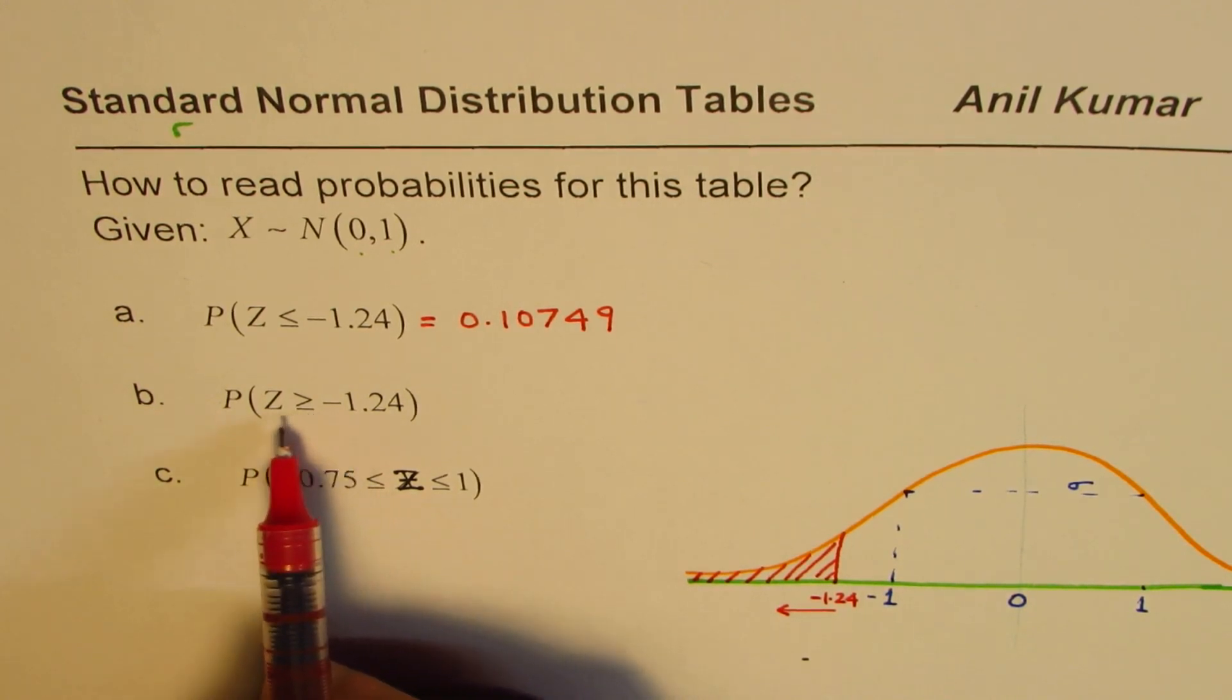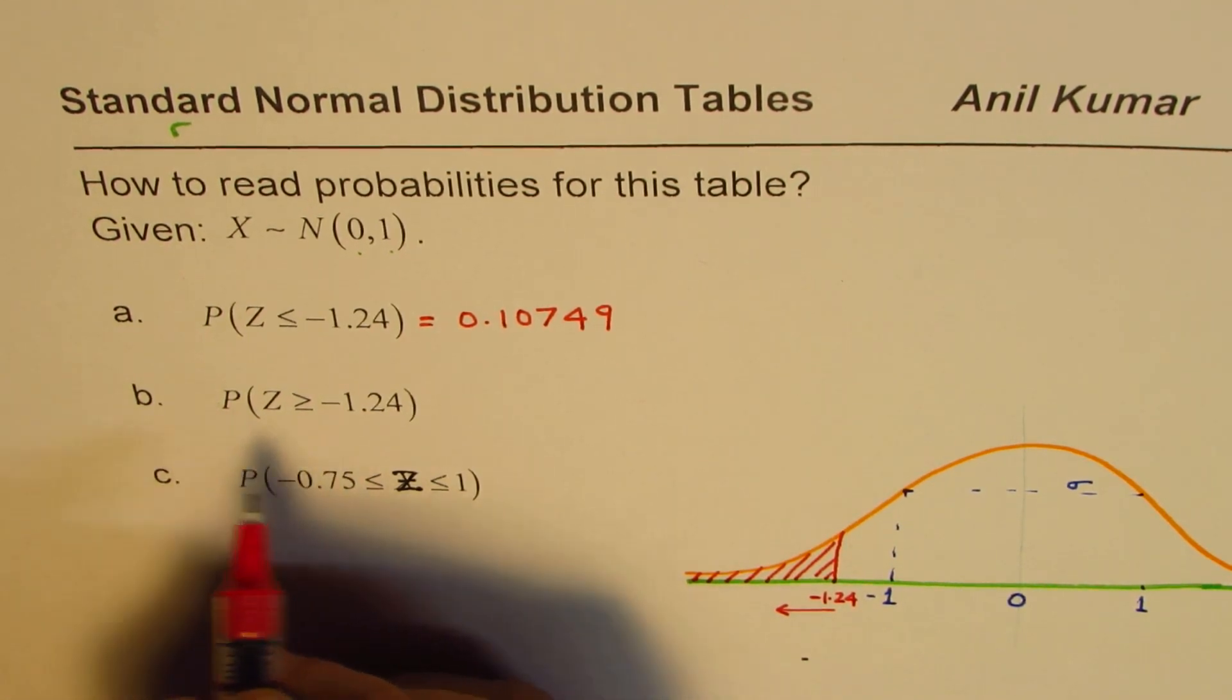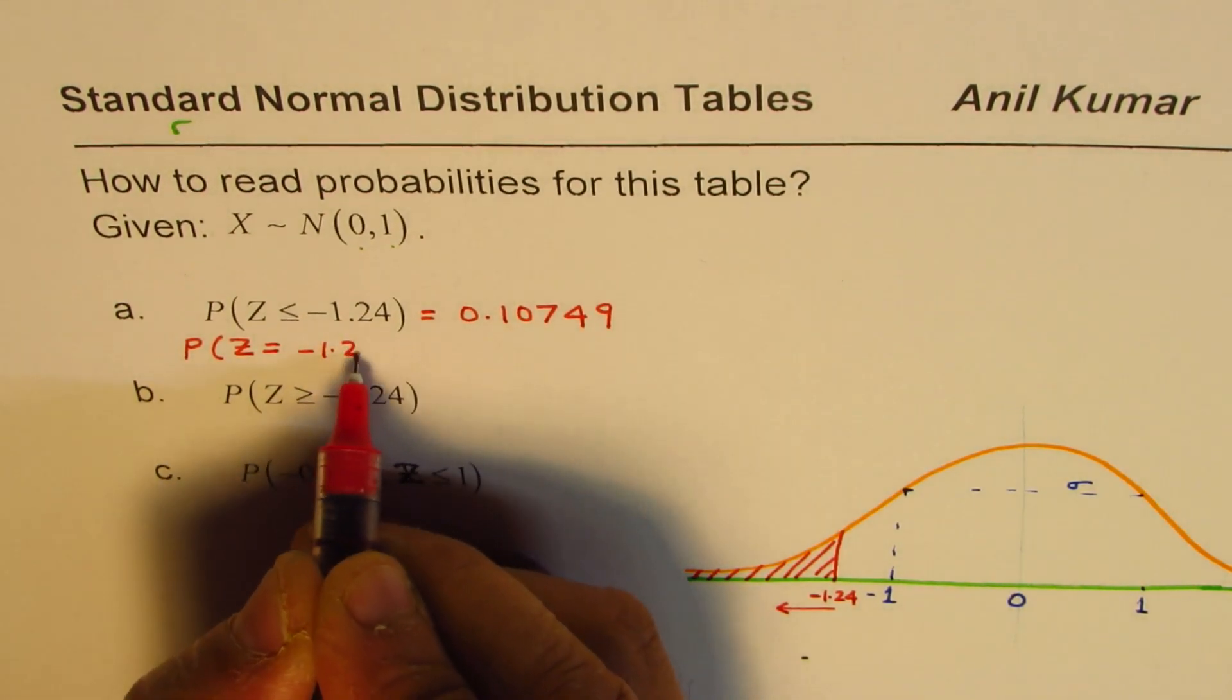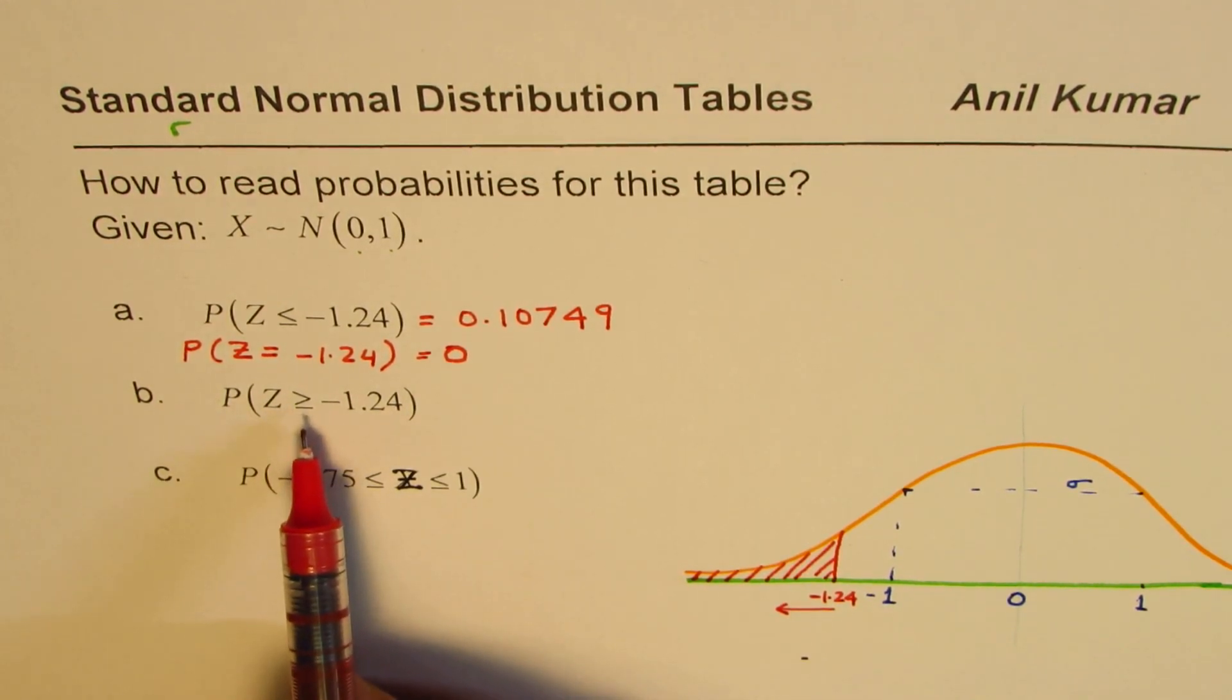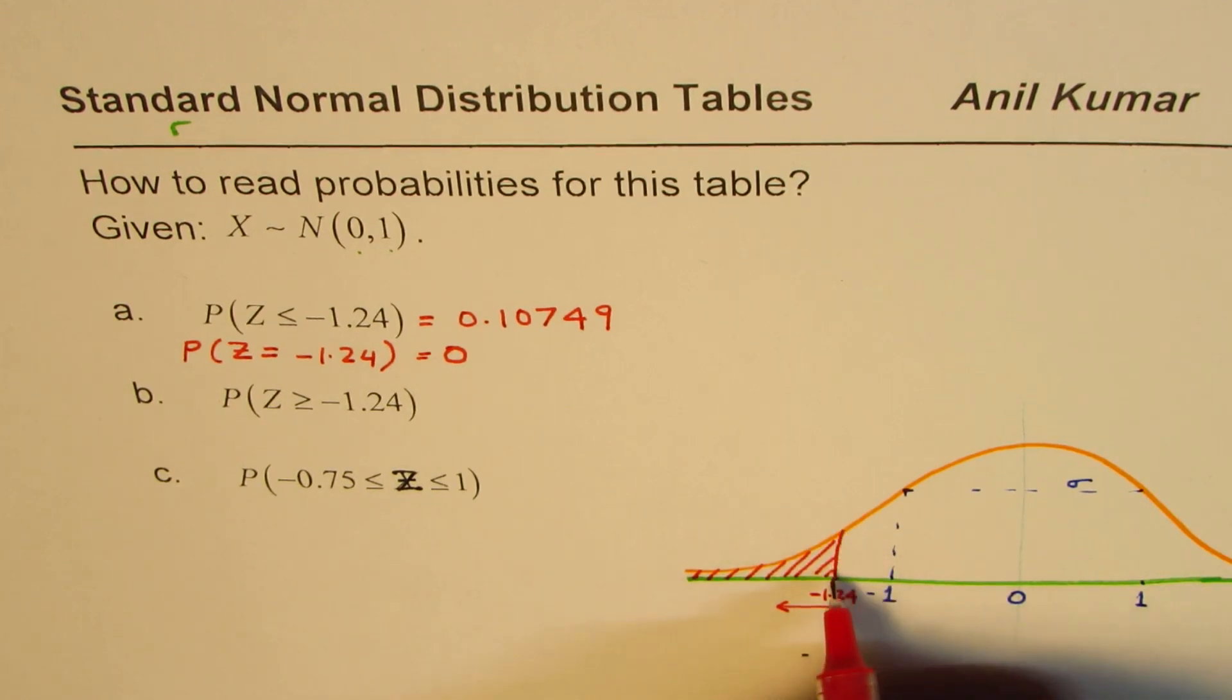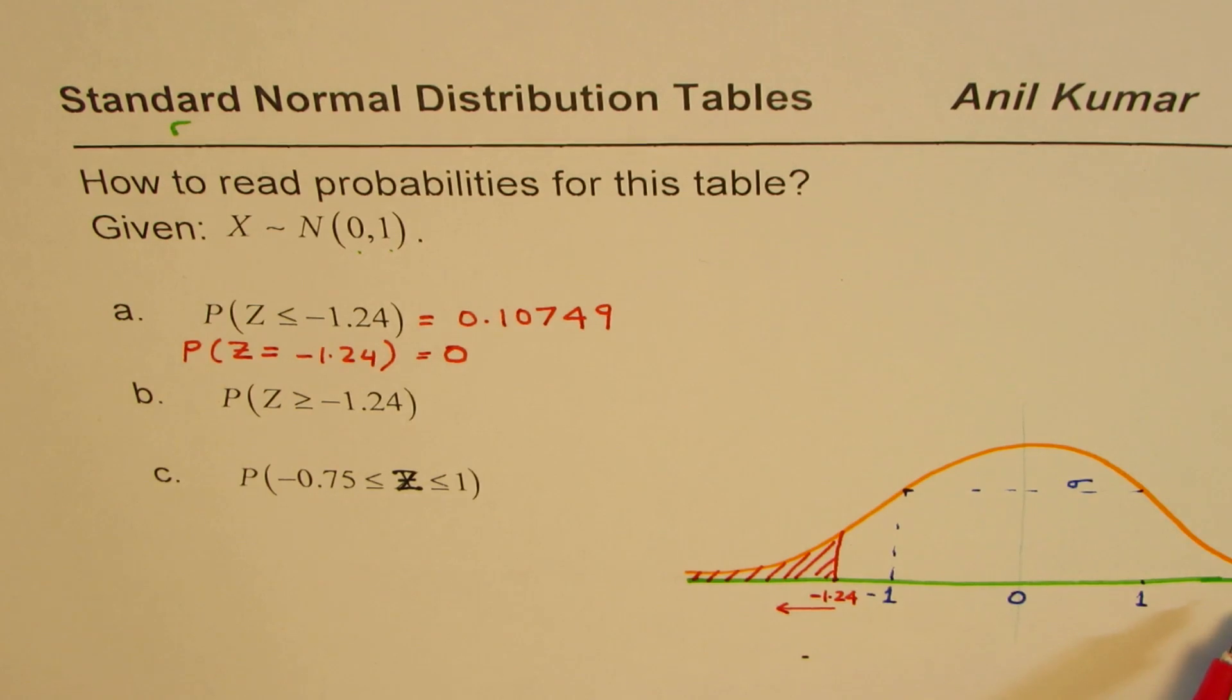Now, the other question part B is what is the probability for this z-score to be greater than minus 1.24, that means on this side. Now, it is important to understand that we are using greater than equal to, less than equal to. What is the probability for z-score to be equal to minus 1.24? So whenever you are talking about a continuous graph and if you look into exact value, the answer is 0. So saying greater than equal to, greater than is one and the same thing. At that point, exactly at that point, the probability is 0 since for this line the width is 0, so the area will be 0. So don't get confused with less than equal to. Remember that at a particular point for any continuous distribution, probability will be 0.